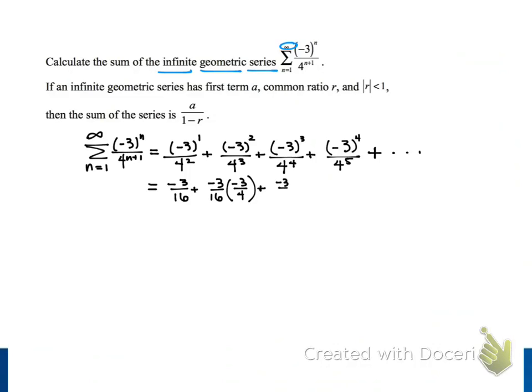Our next term can be written as negative 3 sixteenths, but instead of writing negative 3 fourths, we're going to multiply by negative 3 fourths squared. And our following term is negative 3 sixteenths times negative 3 fourths cubed. And this pattern is also going to continue in our terms.